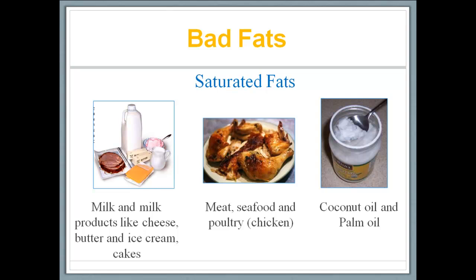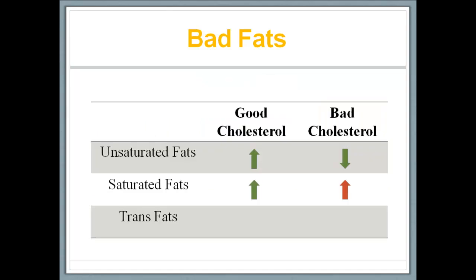Moving on to saturated fats — these are classified as bad fats. As a quick reminder, saturated fats are found in milk products including butter, cheese, and ice cream. They are also found in meat products and oils that are solid at room temperature like coconut oil and palm oil. Saturated fat increases the good cholesterol, which is good, but it also increases the bad cholesterol, which is really bad. Now I'm going to show you a quick simulation of how a heart attack occurs if there is too much plaque buildup or bad cholesterol buildup in the coronary arteries.